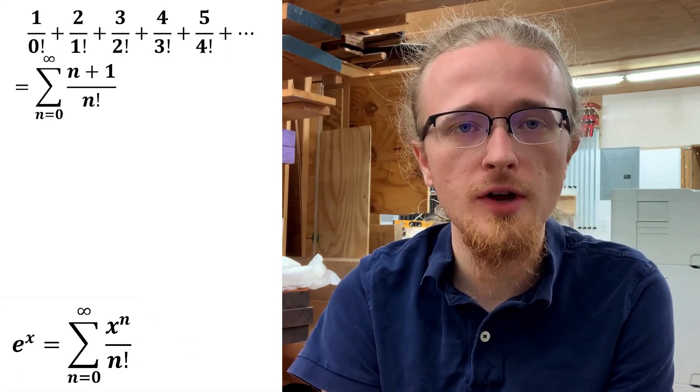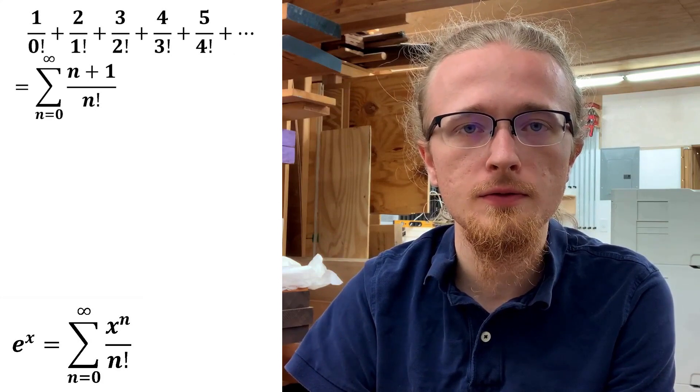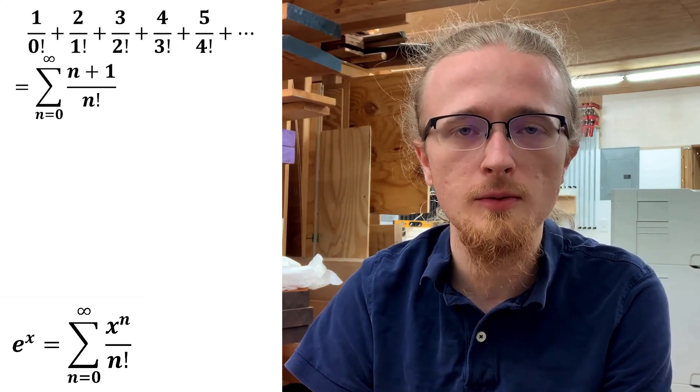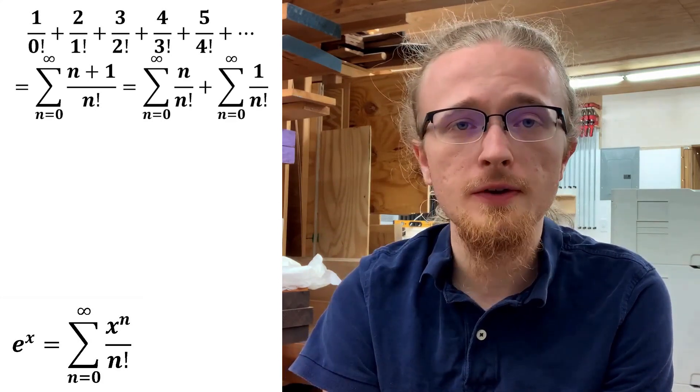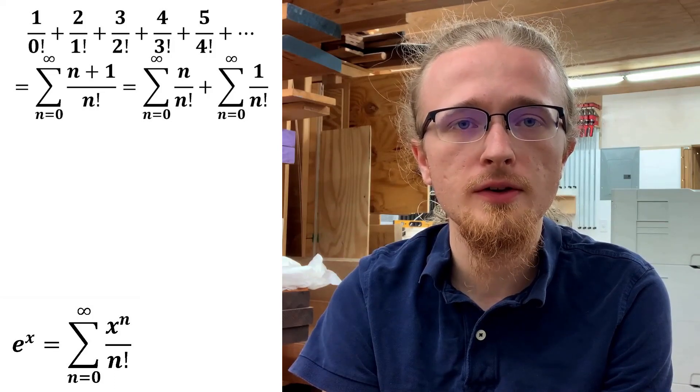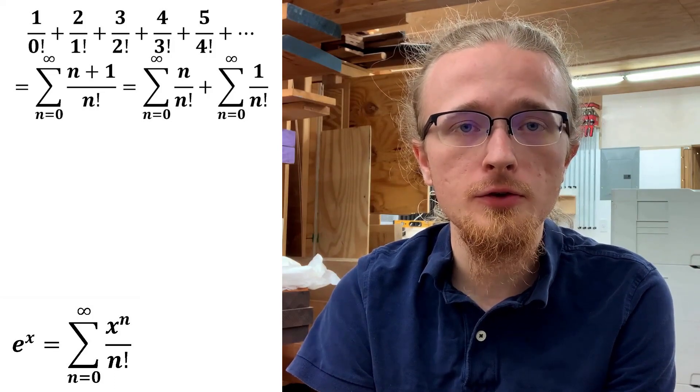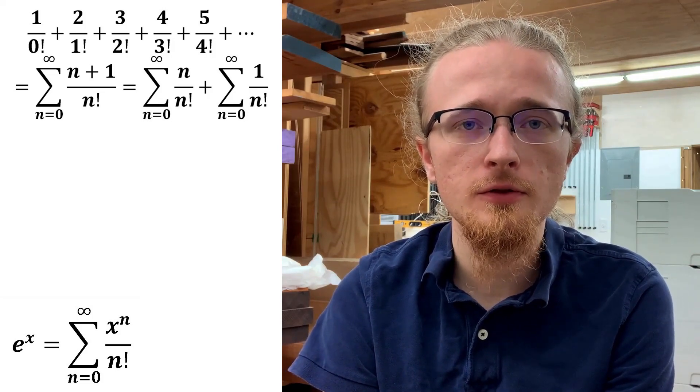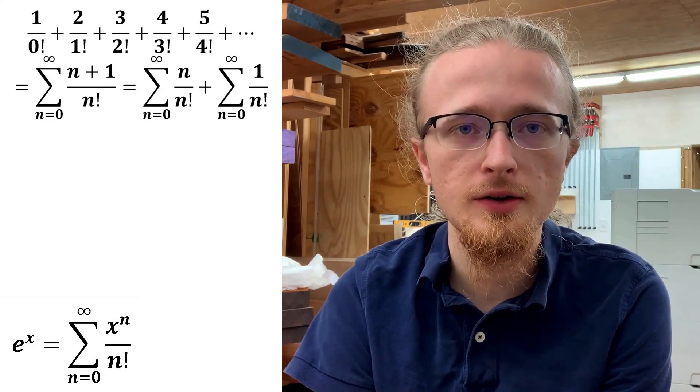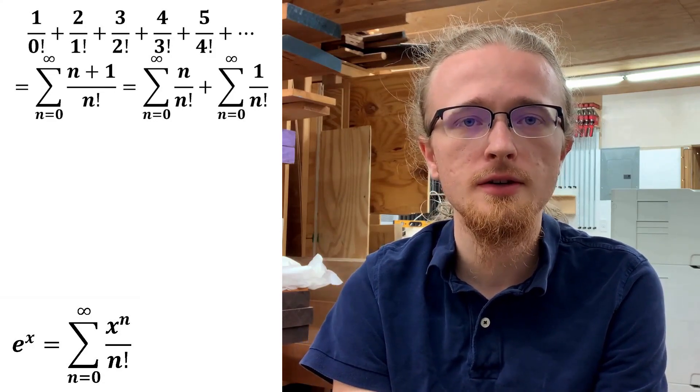With this done, the first step to getting our infinite series into form is to rewrite it as a sum of two infinite series, specifically splitting it on the n plus 1 sum in the numerator. One of the two infinite sums that this leaves us with can be directly related to the Taylor series expansion of the natural exponential.